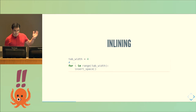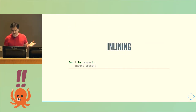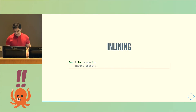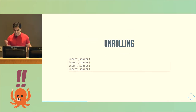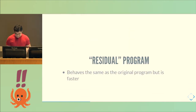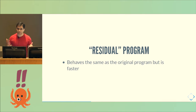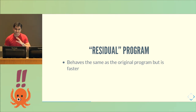Going back to that earlier example: if the tab setting is not used anywhere else, I can just inline it — that saves me a variable lookup, allocating space, and all that other fun stuff. That's constant inlining. What about loop unrolling? If I know I'm going to insert a space four times, why don't I just insert a space four times? At the end of this, I would have what's called a residual program — essentially evaporating away all the parts of the program I don't need. It behaves exactly the same as the original program on that static input, but it's faster.